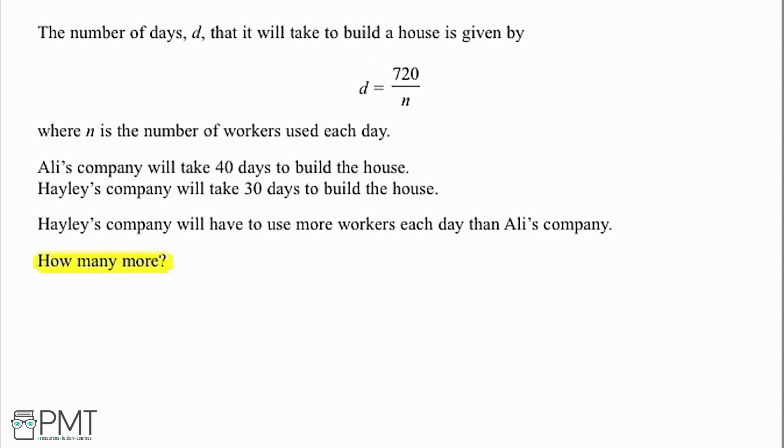Okay, so we're first going to have a look at Ali's company. Now we're told with Ali's company that it's going to take 40 days to build a house. So using our formula that we've got up here, that's going to be 40 equals 720 divided by n. Now we've got one unknown here of n, we've created an equation.